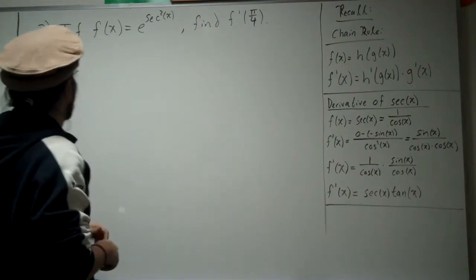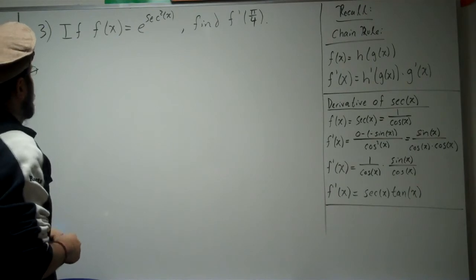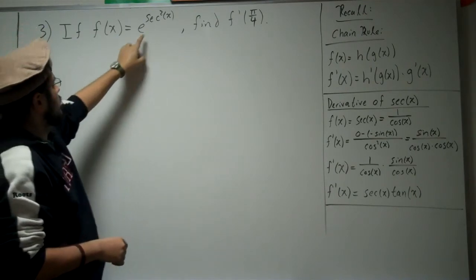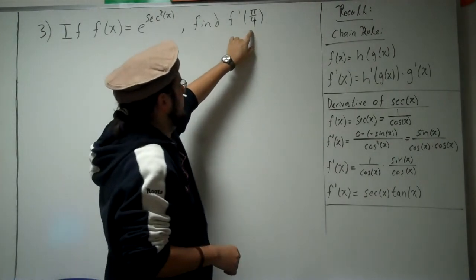Alright, so this is the third problem of the second section of the exam. It says, if f of x is equal to e raised to the secant squared of x, find f prime at pi over 4.